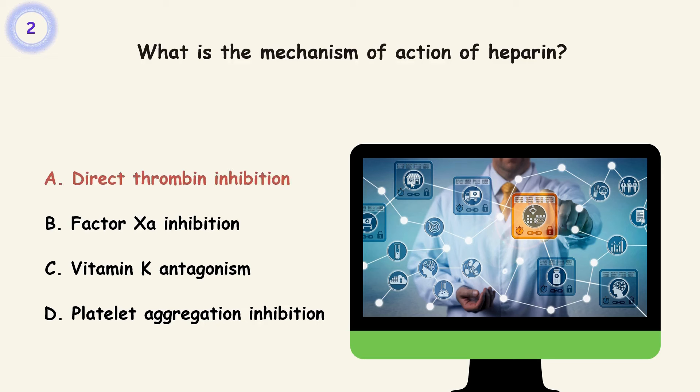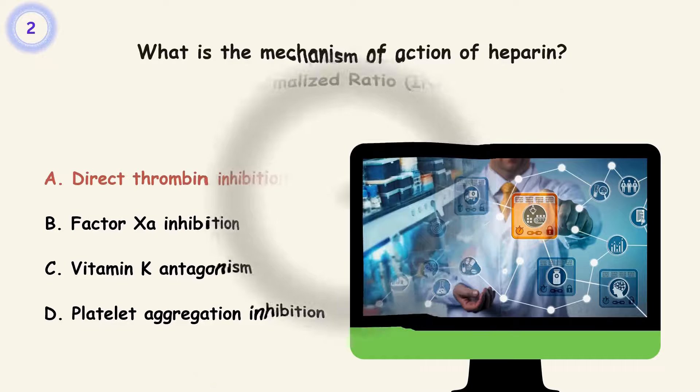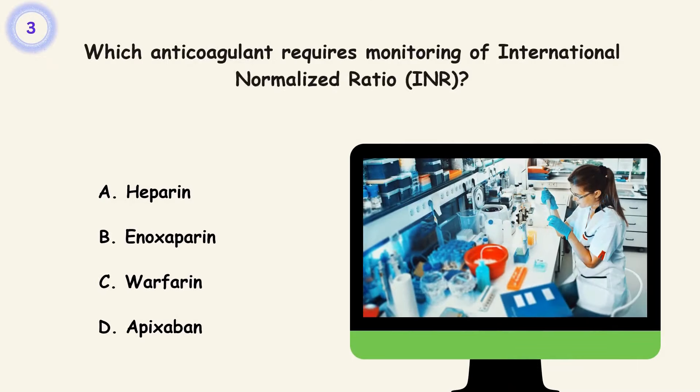Question 3. Which anticoagulant requires monitoring of international normalized ratio, INR? A. Heparin. B. Enoxaparin. C. Warfarin. D. Apixaban. Answer is C. Warfarin.